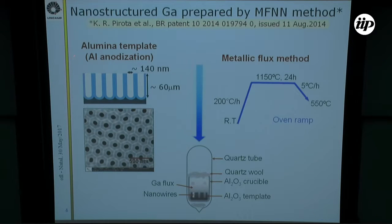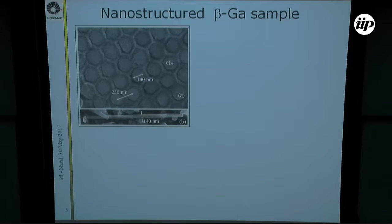In our samples we got nanostructured gallium prepared by the so-called metal flux nanonucleation method that was developed in our laboratory at Unicamp. We start with an alumina template, fabricated by alumina nano-oxidization, where we get a very well-ordered template with nanopores with a large aspect ratio. This is put inside a sealed quartz tube and we make heat treatment so that the gallium goes inside the holes. Then we get the sample that we measured.